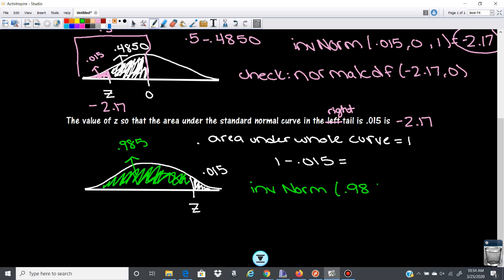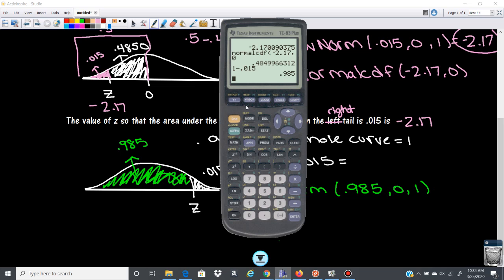0.985, because we always have to put the area to the left, 0 and 1. And we get 2.17. But it's positive this time.